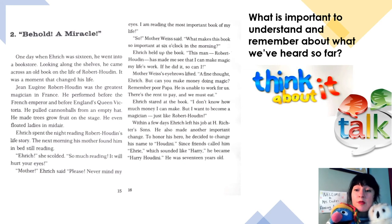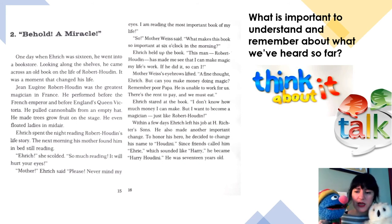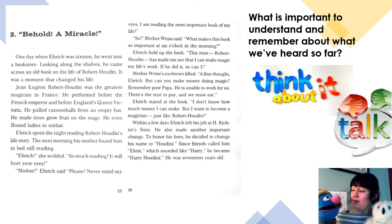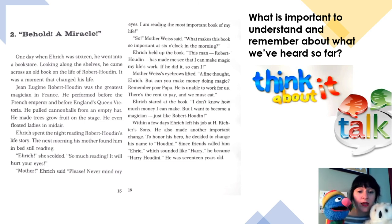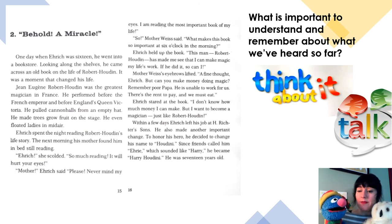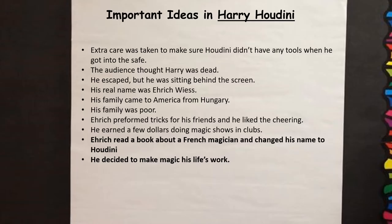What is important to understand and remember about what we've read so far — we've gone into chapter two. I think it's important we found out why and how he changed his name, why he chose that name. And he started to become interested at this point in how to make money at being a magician — how to make it his job. In this last section, we learned that Enric read a book about a French magician and decided to change his name to Houdini based on that magician's name. We also learned that he decided to make magic his life's work.